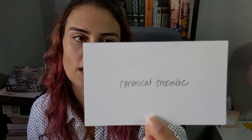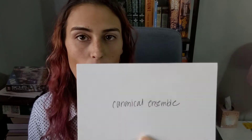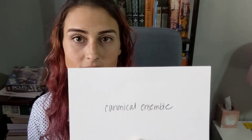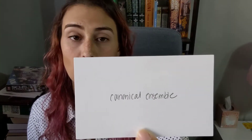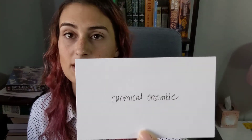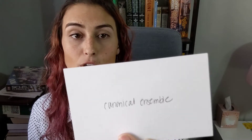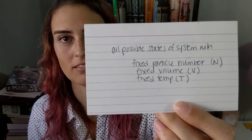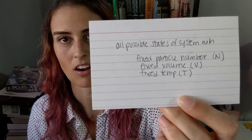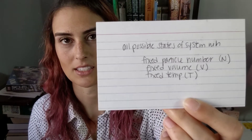The canonical ensemble: this is all possible states of the system with a fixed particle number N, a fixed volume V, and a fixed temperature T — so N, V, T are constant across all possible states.